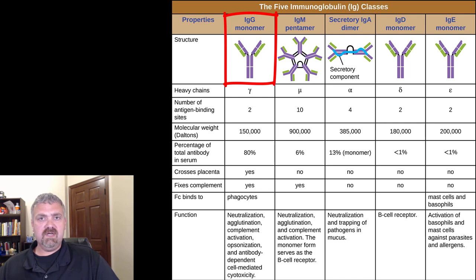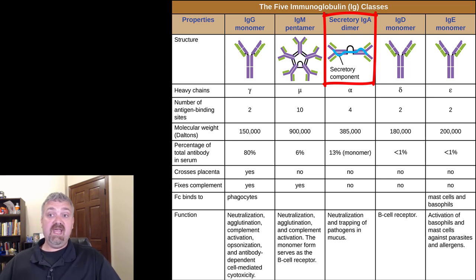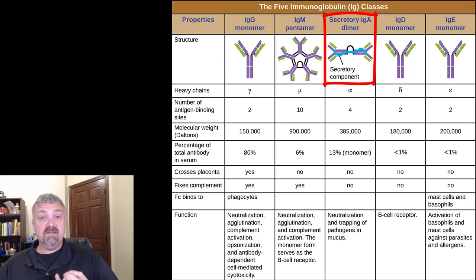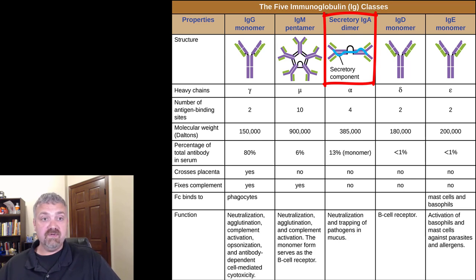So IgG: most numerous by far and also the most effective. Next in GAMED, we have IgA. I like to call these secretory IgA antibodies because it reminds me that they are in glandular secretions. The IgA antibodies are a dimer — there are two of them — and they have a secretory piece added by epithelial cells, which makes them soluble. You're going to find them in your glandular secretions: saliva, tears, semen — all glandular secretions have secretory IgA antibodies. Their job is to be this last line of defense to neutralize and stop pathogens before they enter your body.